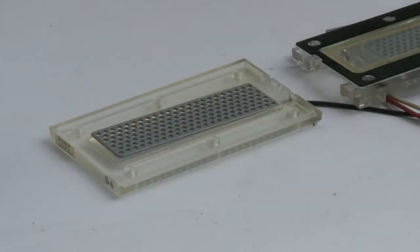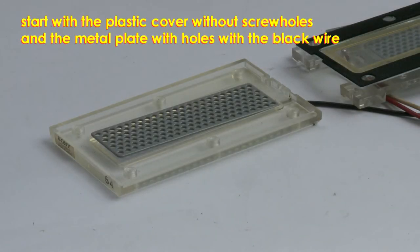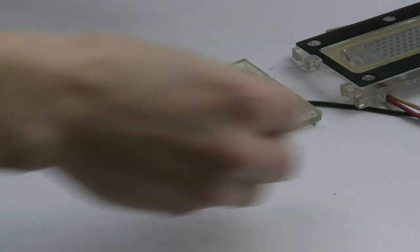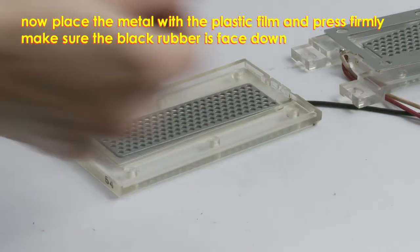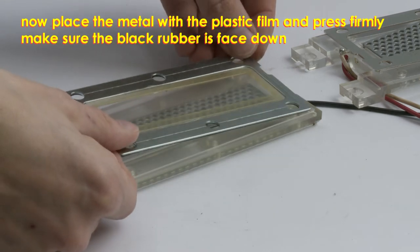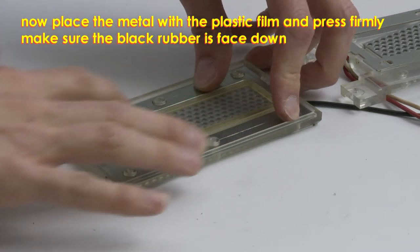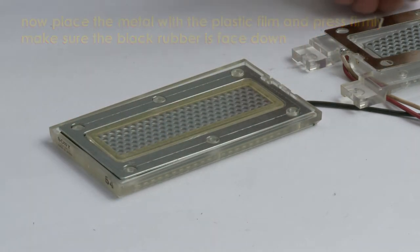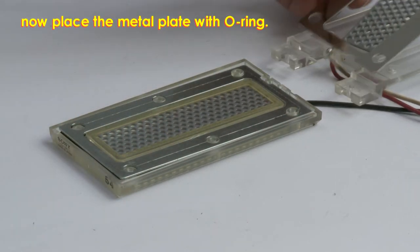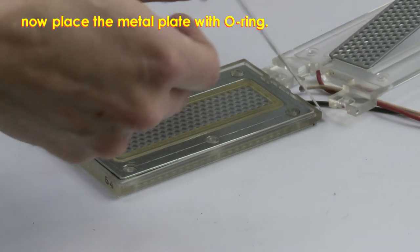Now we're ready to assemble. Take the hard plastic cover without the screw holes. Next is the plate with the film. Put it in with the black rubber facing down. After that, the metal plate O-ring with the white cable.